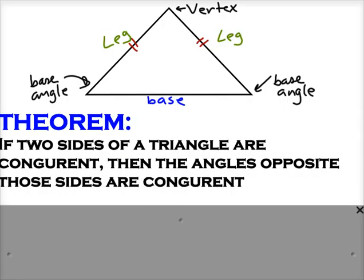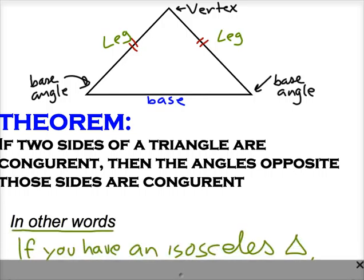The theorem says if we have two sides of a triangle congruent, in other words, if we have an isosceles triangle, then that isosceles triangle has congruent base angles. This means these angles will always be congruent to each other.